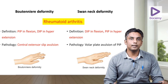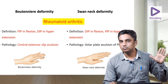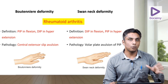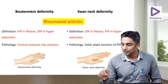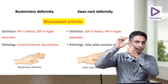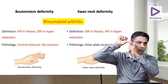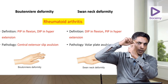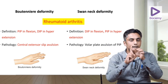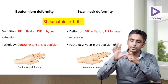Moving ahead, we have the boutonniere and swan neck deformity — very important topics. When you hear the term boutonniere or swan neck, remember rheumatoid arthritis, as these are classical hand deformities in RA patients. In boutonniere deformity, the attitude is PIP joint flexion and DIP joint extension. In swan neck deformity, the PIP joint is in hyperextension and the DIP joint is in flexion — just the opposite.